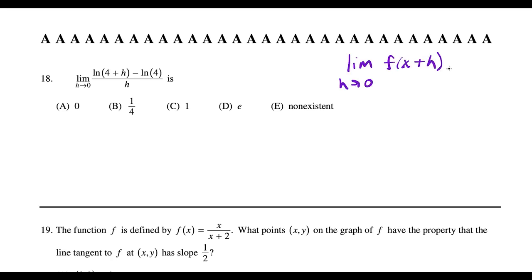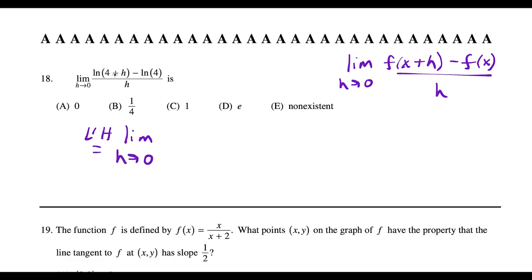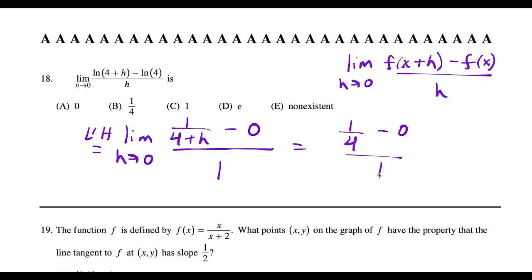Question eighteen: applying L'Hôpital's rule to the limit as h→0 (since it's 0/0). Differentiating with respect to h: numerator gives 1/(4 + h), denominator gives 1. The derivative of the constant ln(4) is 0. Plugging in h = 0: 1/4, which is choice B.